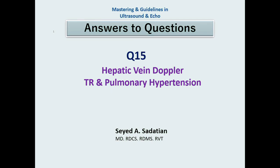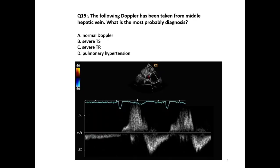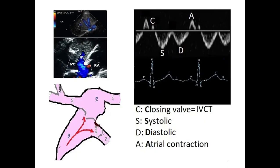Welcome to mastering guidelines in ultrasound and echo. Question 15: the following Doppler has been taken from the middle hepatic vein. What is the most probable diagnosis? Is it a normal Doppler, severe tricuspid stenosis, severe tricuspid regurgitation, or pulmonary hypertension?